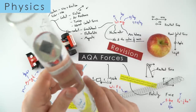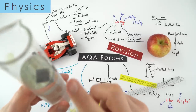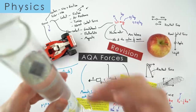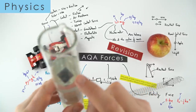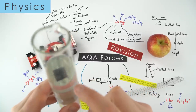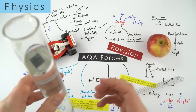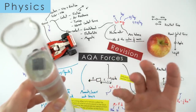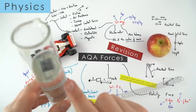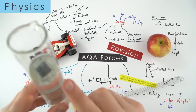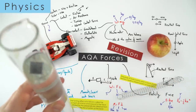When you submerge an object in liquid, there's an upward force acting on it called upthrust. This is because there's a difference in pressure at the top and bottom of the object, and it's the reason ships float. Upthrust, or buoyancy, is a force that acts in a fluid on submerged objects.